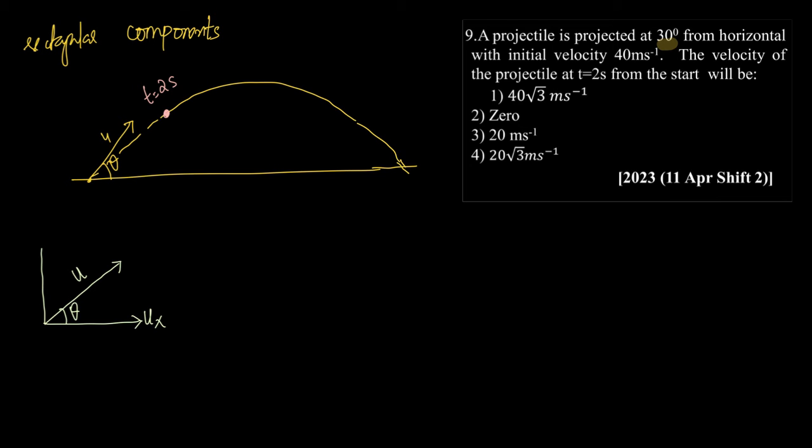ux along the x direction and uy along the y direction. And therefore, u will be equal to root of ux square plus uy square always, okay?